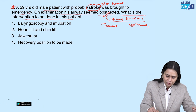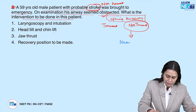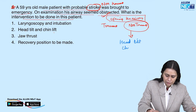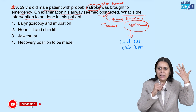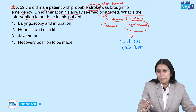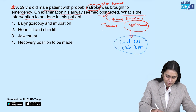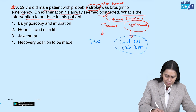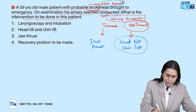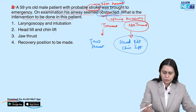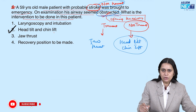If it is a non-trauma patient, we always go for head tilt chin lift. With one hand we tilt the head backward, and with the other hand we lift the chin forward. This pulls the tongue, which is the main culprit causing obstruction in these patients. So for this non-trauma, emergency obstructed airway, the immediate manoeuvre is head tilt chin lift.